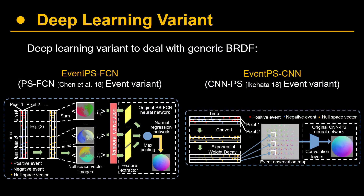We also ported two deep learning-based photometric stereo methods to their event variants. The input for the neural network is constructed from the null space vectors. These deep learning variants deal with generic BRDF scenarios, which include cast shadows, inter-reflection, and specular reflection. As a result, they are more robust and achieve higher accuracy than the SVD algorithm, however they are also more time-consuming.